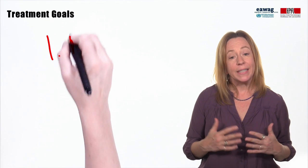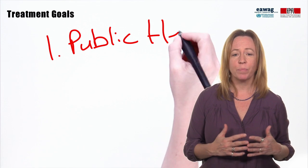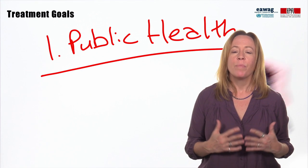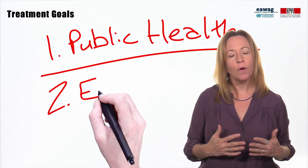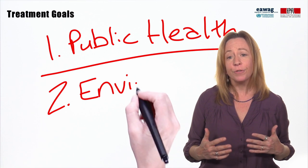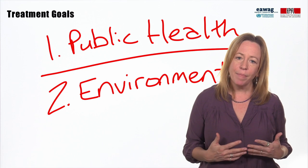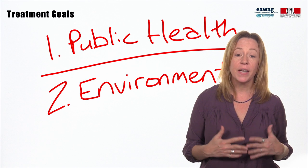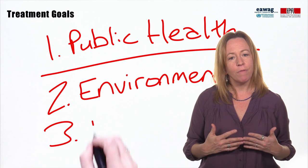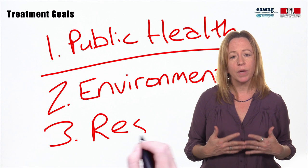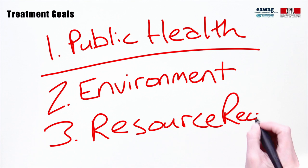Our number one goal in sanitary engineering and fecal sludge management is always the protection of public health. Protection of environmental health is also very important, and as shown in the F diagram, these first two goals are often very closely linked together. If excreta is contaminating the urban environment, then it is a public health risk. A third goal that is important to meet whenever possible is resource recovery from treatment products, which is also tied closely to the first two objectives.